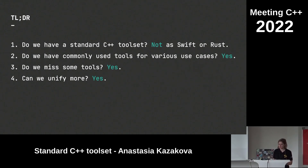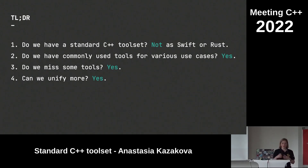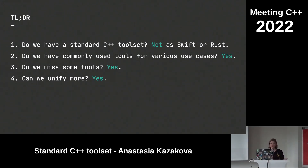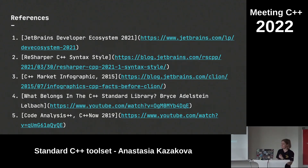Trying to summarize what we have in the C++ ecosystem: do we have a standard C++ toolset? Not in the sense of Swift or Rust, but we have lots of tools which are more or less standard and commonly used for different use cases — and sometimes that's standard for a specific area. Do we miss some tools? Definitely yes — package managers and a macro-free unit testing framework are good examples. Can we unify more? For sure — there is room for improvement and we can integrate tools better. I'll publish the presentation so you can click the links. Thank you.